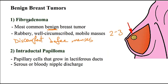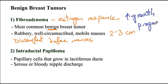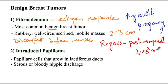Fibroadenoma has a strong estrogen response. As a consequence, it will increase in growth during pregnancy due to elevated estrogen levels, and then regress in size postmenopausally due to low estrogen levels.